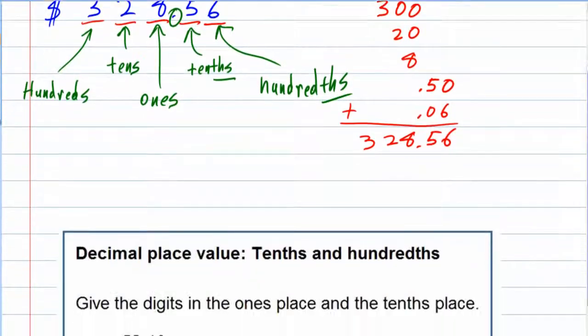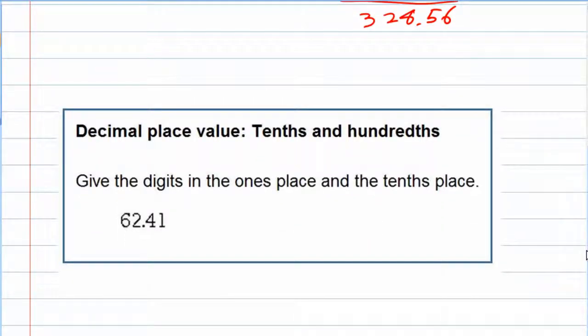If we were asked a question, given a number to find a place value, in this question, give the digits in the ones place and the tenths place. So we're actually being asked two questions.